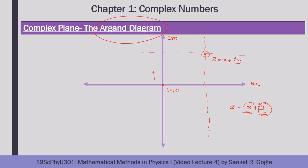The rules for plotting are: if x is positive, move right along the real axis; if x is negative, move left. If y is positive, move upward along the imaginary axis; if negative, move downward. In this way, any complex number can be plotted in the Argand plane. Note that a real number is always a special case of a complex number — for real numbers, the imaginary part is zero, so all real numbers lie on the real axis of the Argand plane.